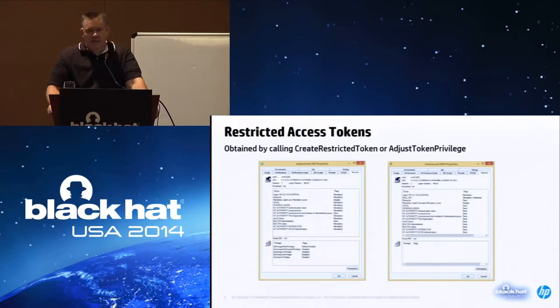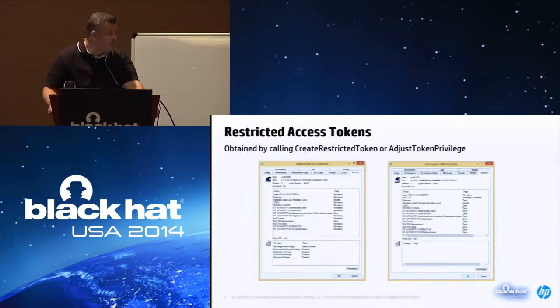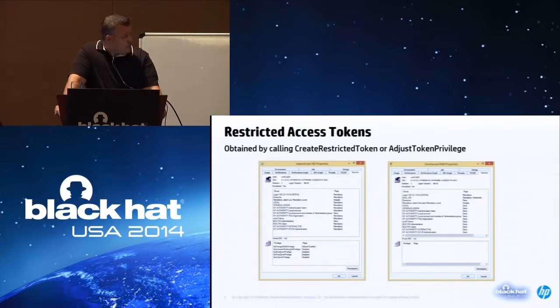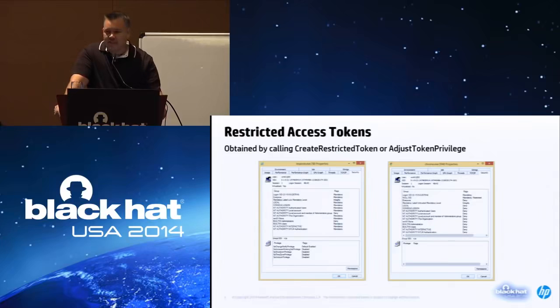If you look at a lot of the zero days that are released or actively in the wild, the first mitigation that Microsoft releases is to enable enhanced protected mode and enable EMET to stop them. They're relying heavily on sandbox implementations to stop zero day attacks from being useful. To understand exactly how it's implemented, we need to go back to 2007 when Microsoft's David LeBlanc released a series of blog posts called 'Practical Windows Sandboxing,' providing best practices for application developers to sandbox their applications. The first recommendation was that the process should run using a restricted access token.